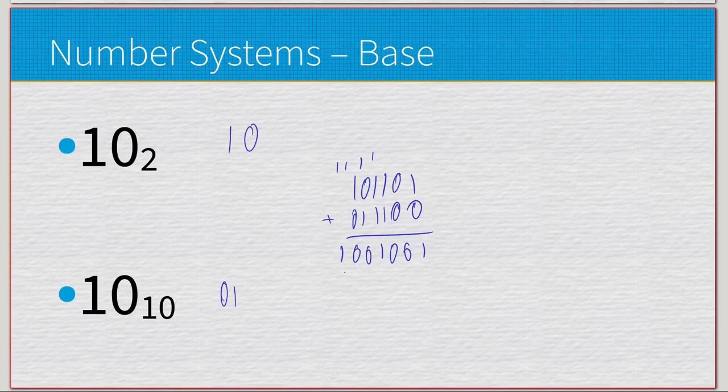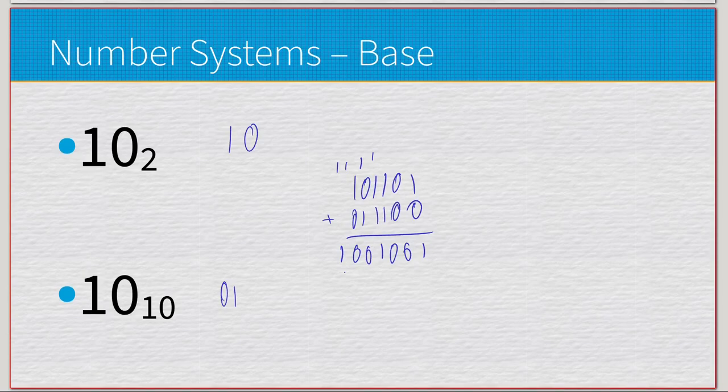Addition works the exact same way no matter the number system, if you treat the carry 1 as an overflow bit — not as a 1 from carrying a 10. It's an overflow bit because you exceeded the maximum value in your number system. In binary the maximum value is 1, in decimal it's 9, in octal it's 7, in hexadecimal it's F, in ternary it would be 2, and in quaternary it would be 3. There are lots of different number systems, but addition in all of them is always going to be consistent and work the same way.